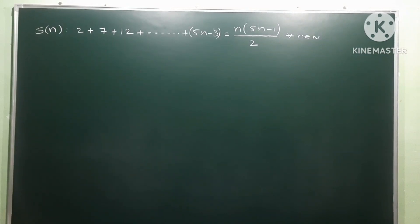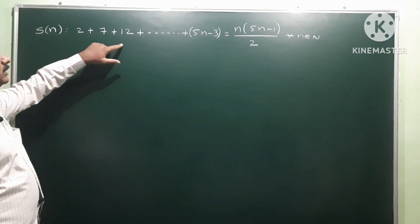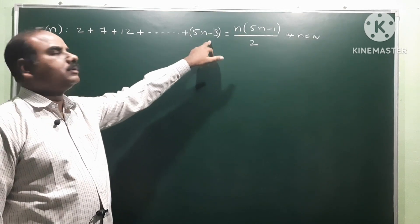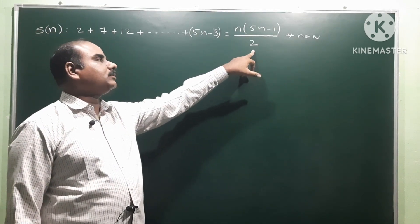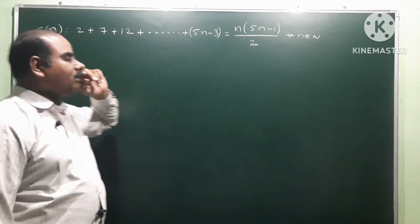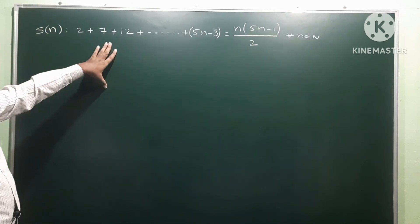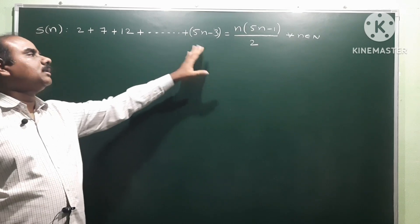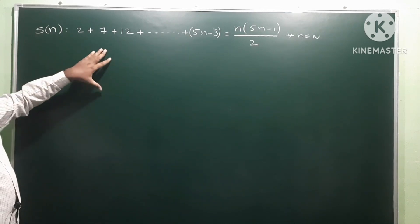S_n is equal to 2 plus 7 plus 12 plus and so on, where the nth term is 5n minus 3. The RHS is n into (5n minus 1) by 2, for all n. We have to show that LHS and RHS are equal by the principle of mathematical induction.